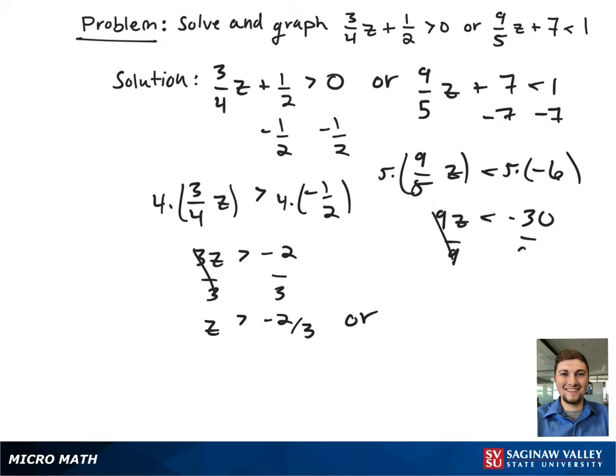To get z by itself, we're going to divide both sides by 9. After reducing, this gives the right hand side of the inequality to be z is less than negative 10/3.